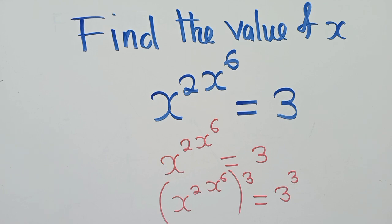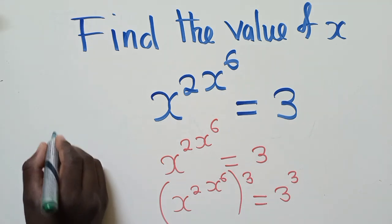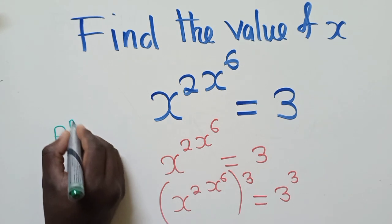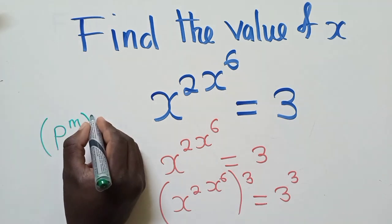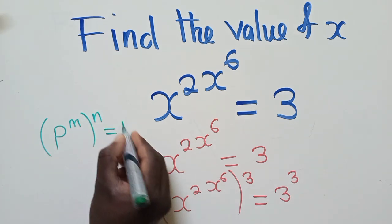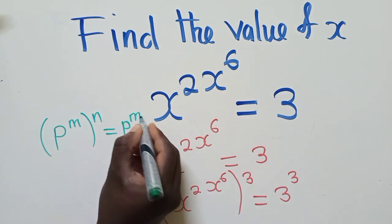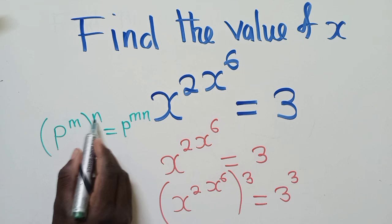Where if you have p power m multiplied by p power n, this would just be p power m times n. So this power and this will be multiplied.